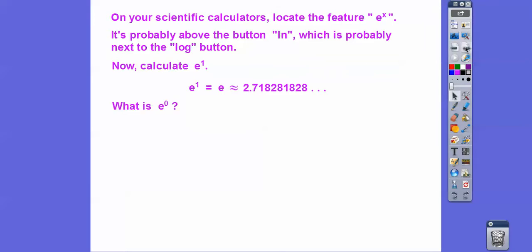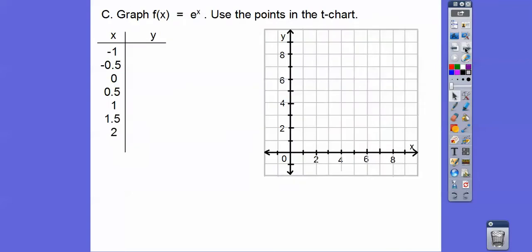How about e to the 0? Well, anything to the 0 equals 1. So you don't, I mean, you can punch it in your calculator, you'll see that it's 1. How about e squared? So let's see if you can get this, e squared. So make sure you can locate that feature because that's important to be able to graph these. So it should be about 7.389 and some change.